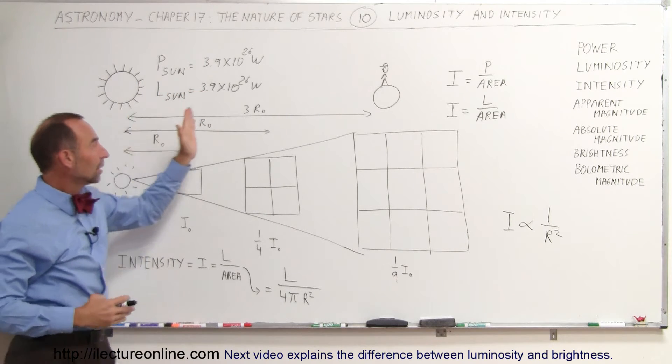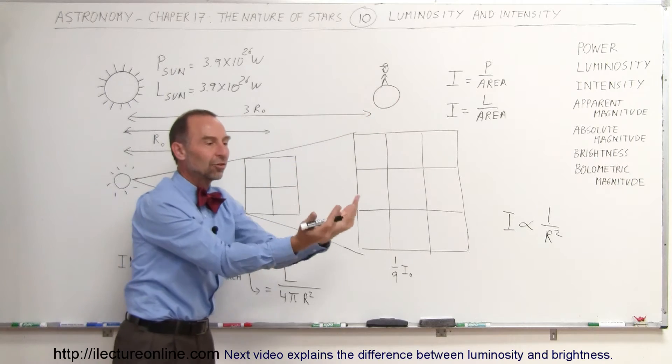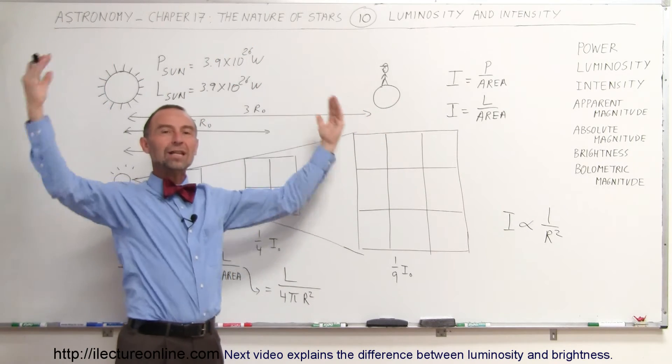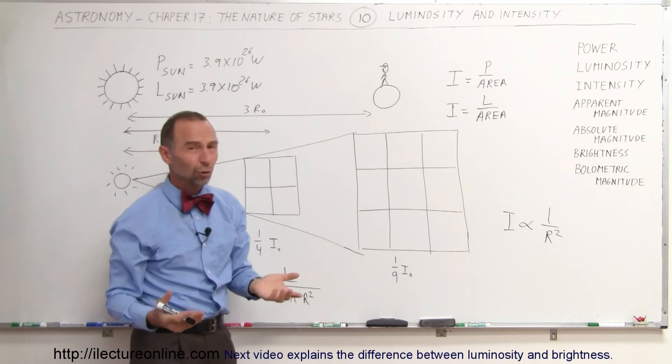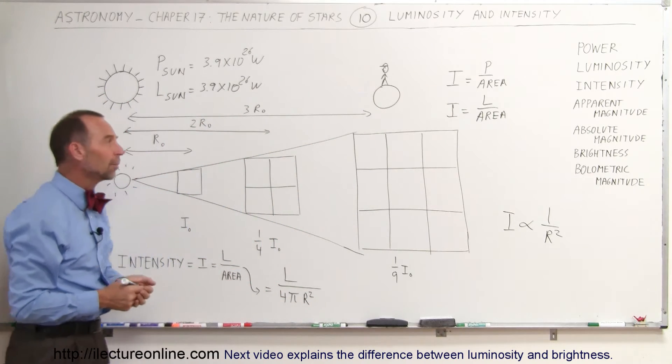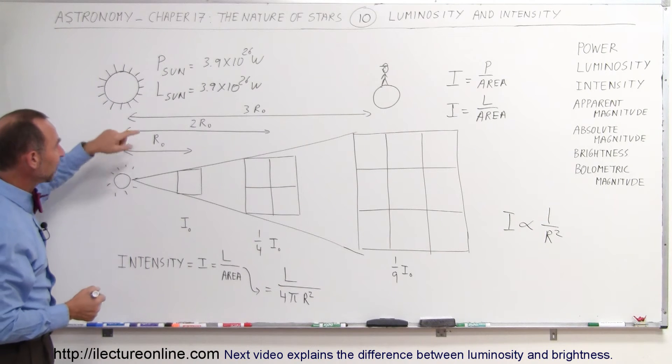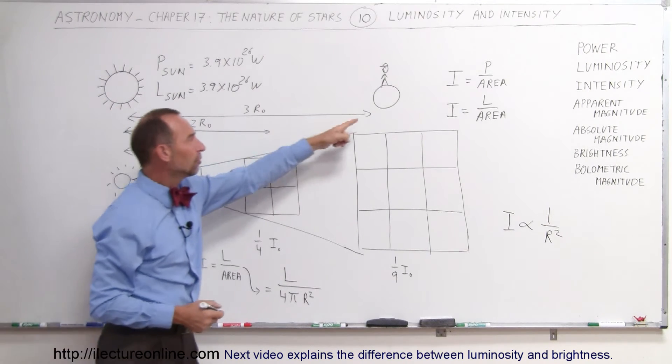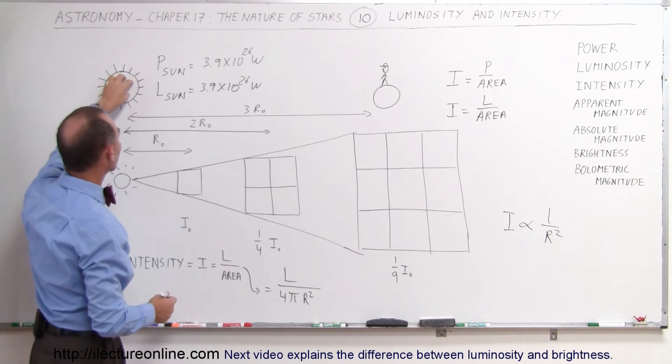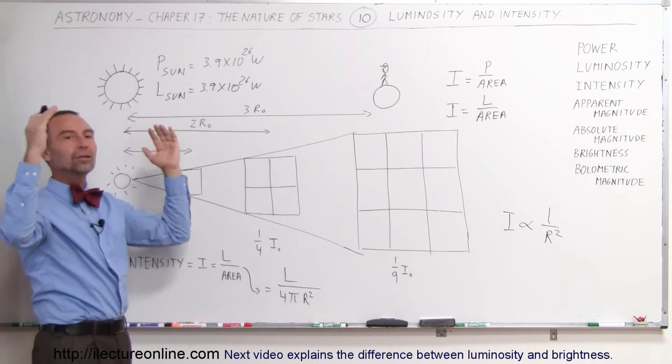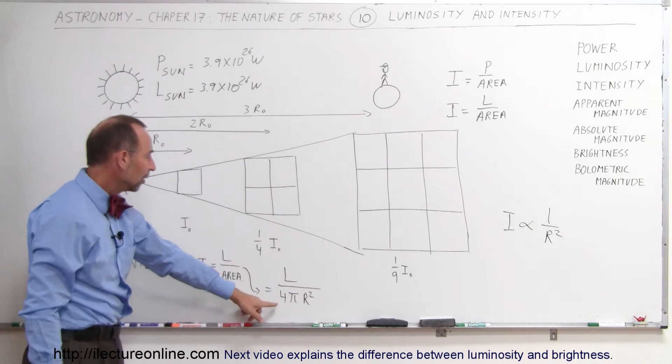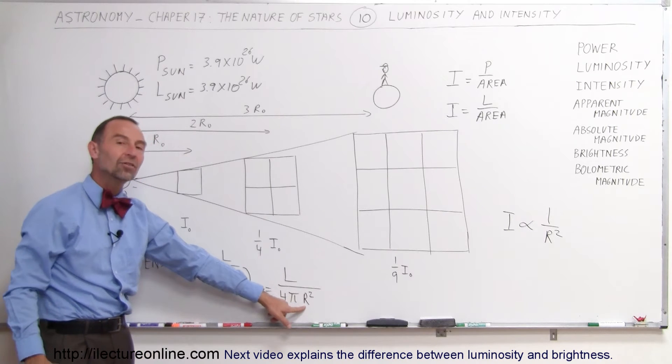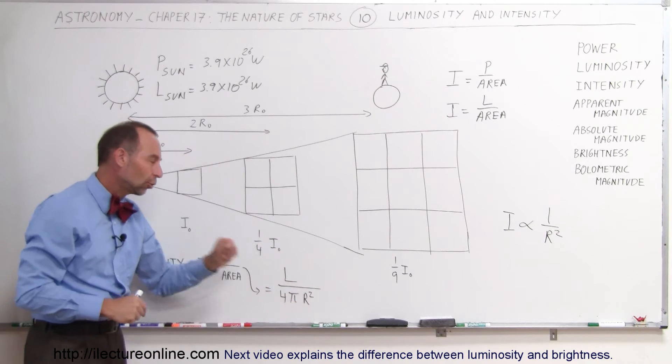And so, by the time the light gets to the Earth, you can imagine a sphere that has a radius of the distance between the Sun and the Earth, which would be, of course, one astronomical unit, or about 150 million kilometers. So, if you want to find the intensity at the Earth, what you do is, you take the total luminosity of the Sun and you divide it by the total surface area of a sphere made by the Earth's orbit.